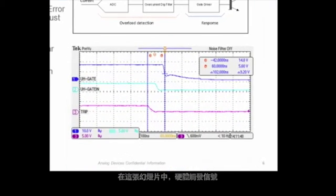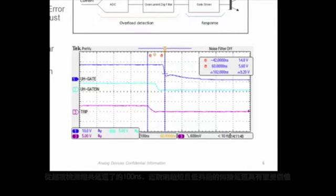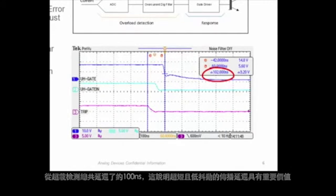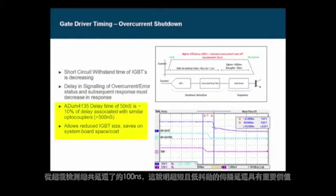In this slide, the delay between the hardware trip signal, the PWM output signal, and the actual gate emitter waveform of the upper IGBT in one of the inverter legs is shown. The total delay to commencement of IGBT turn off is seen to be about 100 ns from detection of the overload, showing the value in having such a short and low jitter propagation delay.